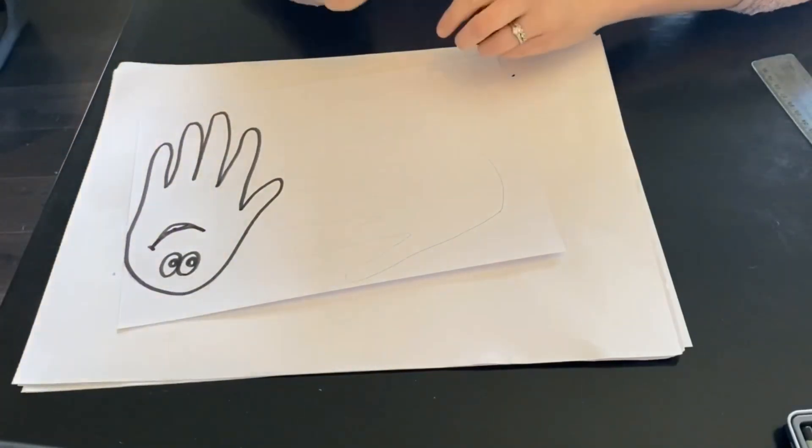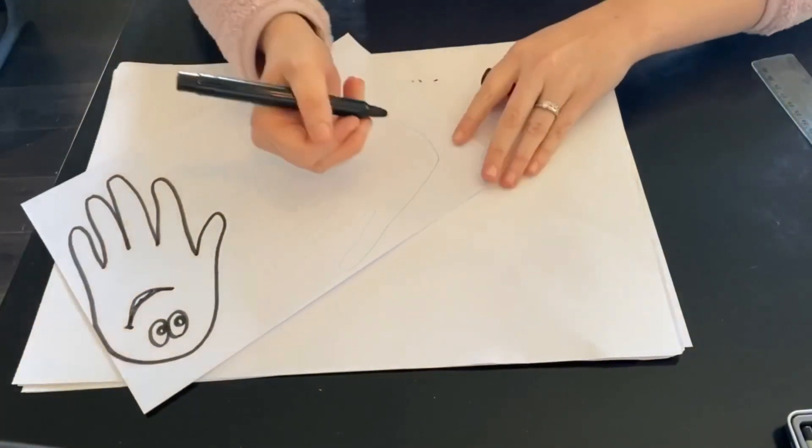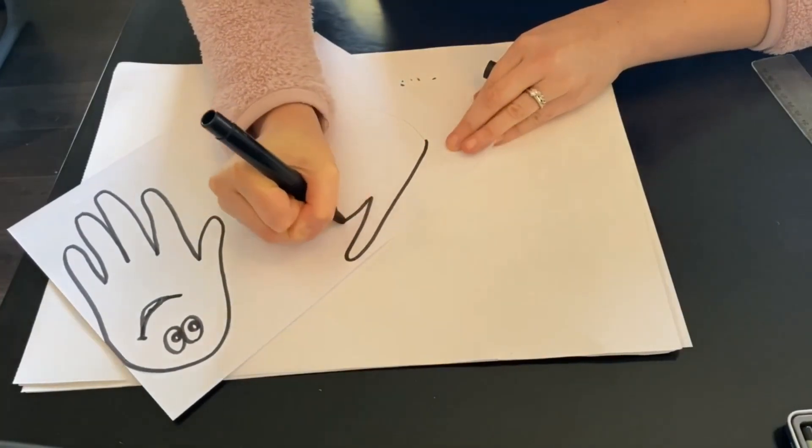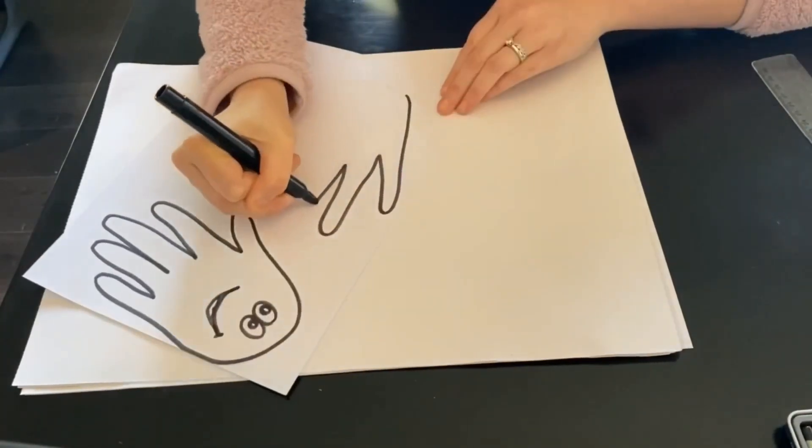Once you finish drawing your jellyfish's face, you need to trace the second hand with your black marker nice and carefully all the way around.